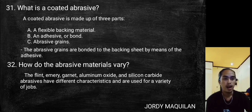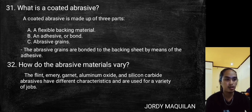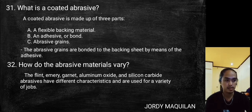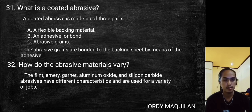How do abrasive materials vary? The types include flint, emery, garnet, aluminum oxide, and silicon carbide. These abrasives have different characteristics and are used for a variety of jobs.